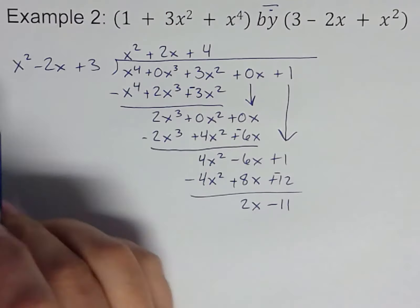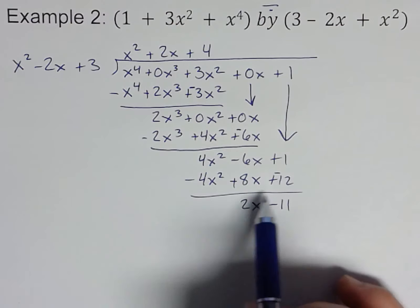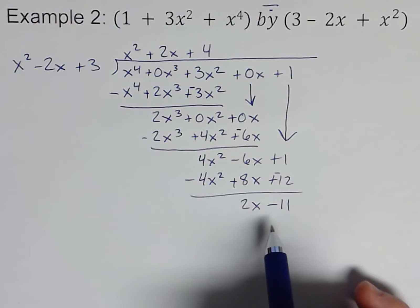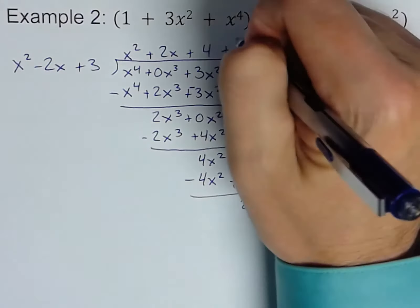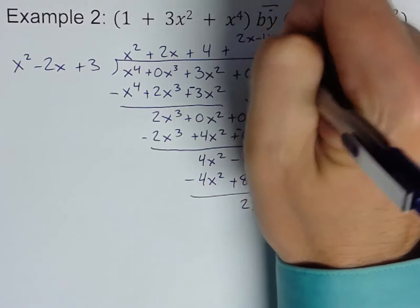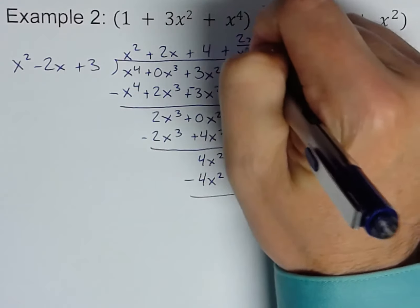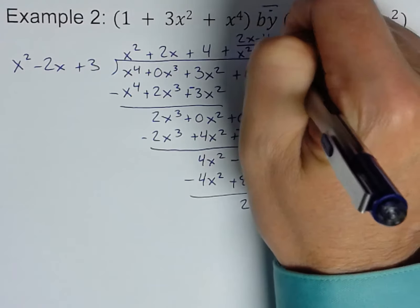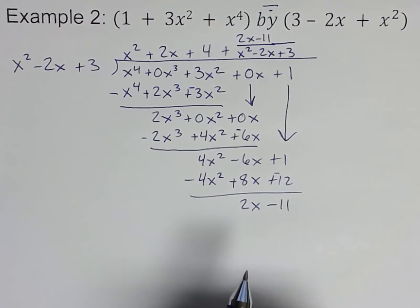We're almost done. So first term goes away. We've got 2x minus 11. It can't go anymore. x squared will not go into 2x, so this is our remainder, right? It's what's left over. So this did not divide perfectly. We do have a remainder. Again, we'll write it this way: plus 2x minus 11, all over x squared minus 2x plus 3. Again, there is long division of polynomials.